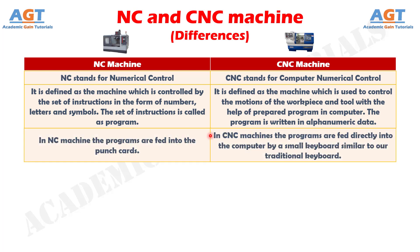Number 3. In NC machine, the programs are fed into punch cards, whereas in CNC machines, the programs are fed directly into the computer by a small keyboard similar to our traditional keyboard.